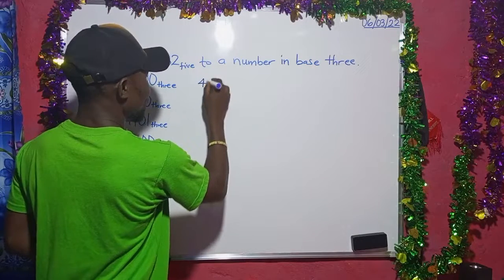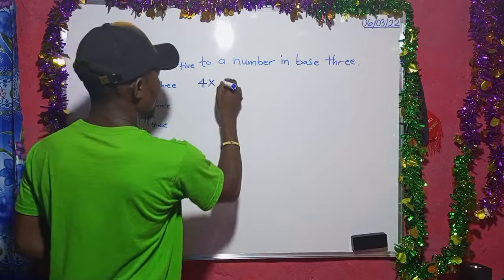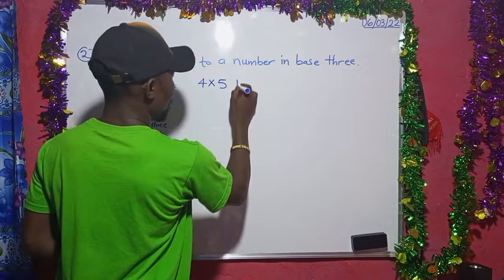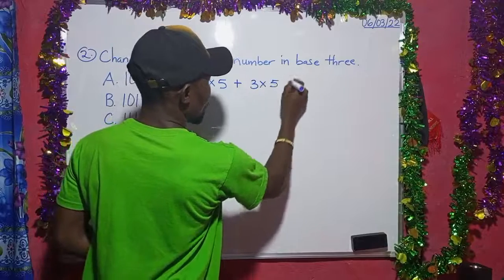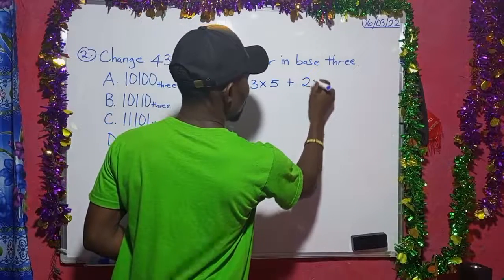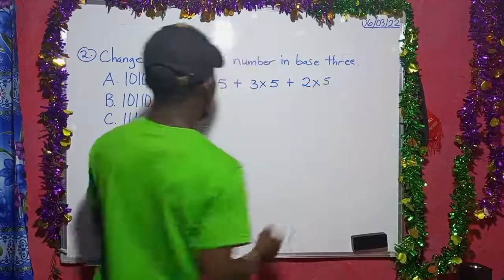So we can now say 4 times 5 plus 3 times 5 plus 2 times 5. So we are going to write our exponents or the basis.